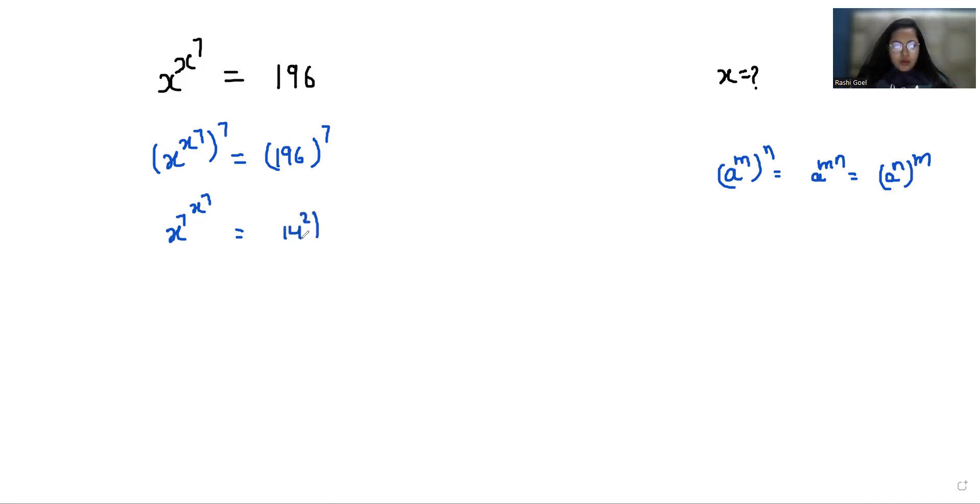Whole power 7, so x power 7 power x power 7 equals - again I'm going to use this rule - so we can write it as 14 power 2 times 7, which equals 14 power 14.